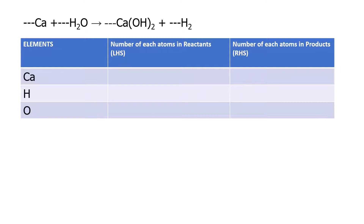The first step is to write all the elements involved in the chemical reaction, then equate the number of atoms on the product and reactant sides. For calcium, we can see only one atom on the reactant side and one on the product side. For hydrogen, we have two on the reactant side, and two plus two on the product side gives four.